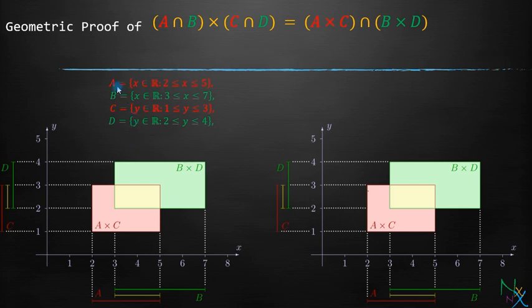Set A is drawn here on the x-axis, set B is drawn here in green color, set C is drawn on the y-axis in the red color and set D is drawn in green color on y-axis.